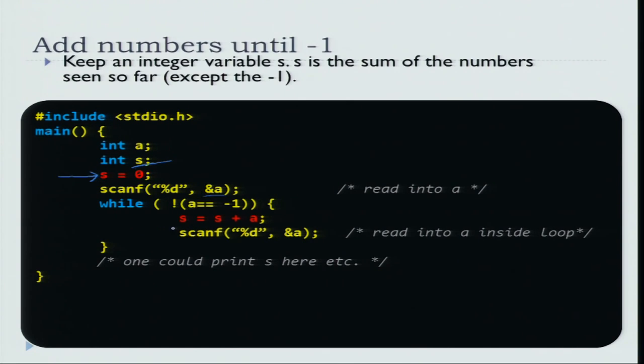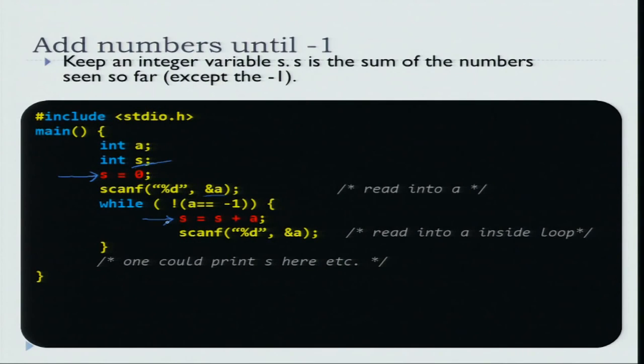The difference from the loop that we have seen so far is highlighted in red. Earlier, recall that we were reading the number and just testing whether the number is minus 1 — if it was not minus 1 you read one more number. Now inside the loop what we will do is keep a running sum of the numbers that we have seen so far. Initially s is initialized to 0; then if the first number is not minus 1 you add the first number to s, so s will now be the first number. Read the second number — if the second number is not minus 1 you will enter the loop again and add the second number to s. So s is now first number plus second number, and this keeps on going until you hit a minus 1 in the input.